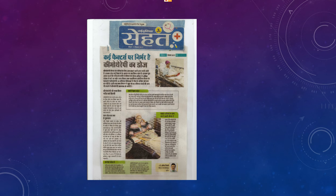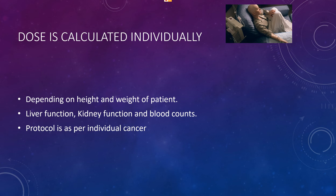For good long-term results, we require the optimum dose of treatment, which is always calculated very precisely. Each patient is different, so the dose calculation takes into account the height and weight of the patient, whether the patient has proper liver function, kidney function, and blood counts. The protocol — what drug to give, what combination of drugs — is decided as per the individual cancer that the patient has.